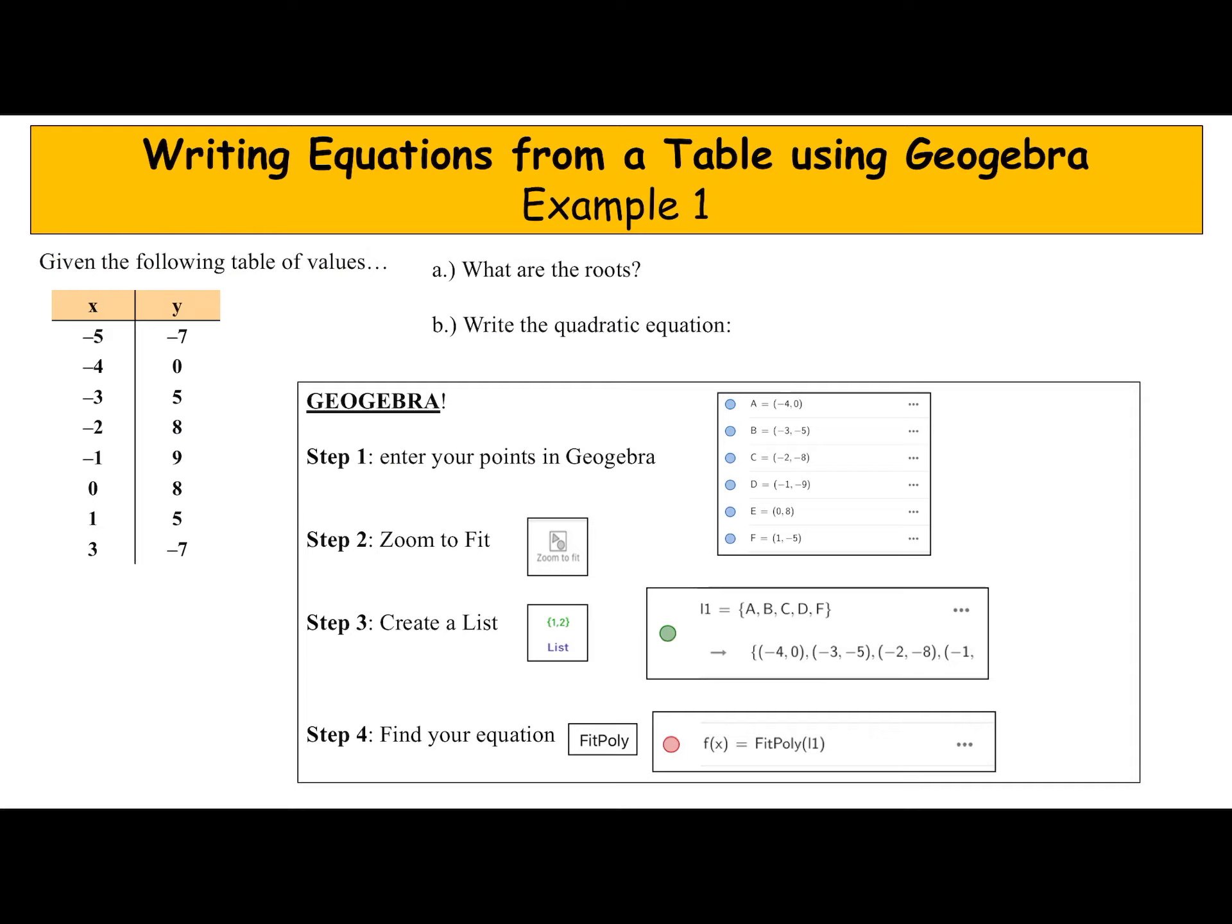Writing equations from a table using GeoGebra. Based on the numbers in our table, we're going to write a quadratic function. Remember, the quadratic function looks like this: f(x) equals ax squared plus bx plus c. We're going to fill in the a, b, and c with numbers. First, we'll identify the roots, then write our equation.